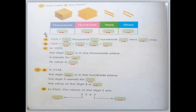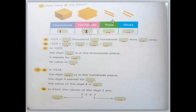Let's check this one — how many boxes are there? Let's check the thousands: how many thousands do you see here? We just have 1. How many hundreds do you see here? Let's count — we have 3. How many tens over here? We just have 2. And how many ones over here? Let's count.